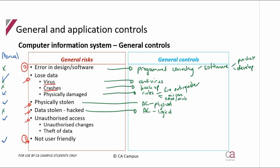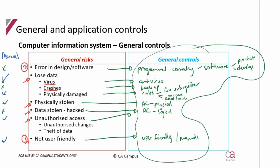Unauthorized access from someone outside the business is the same as hacking, but unauthorized access can also be someone inside the business. Making sure the system is user-friendly, and having manuals so that if you don't know what to do you can research it, helps ensure data is input correctly so it is processed correctly because it was programmed correctly. Those are some general controls, and now I'm going to put these controls into specific categories of general controls so you can see how to study them.